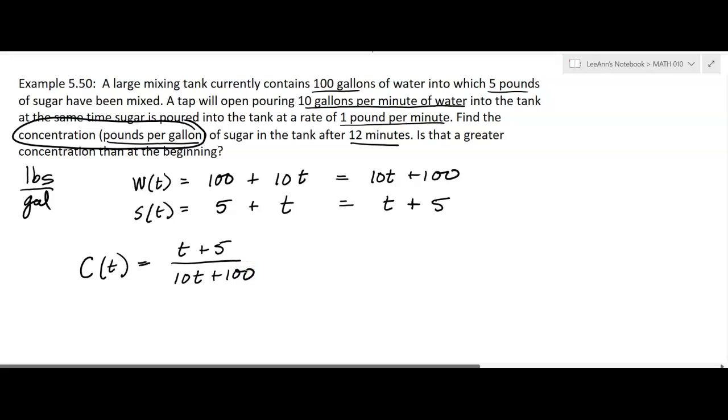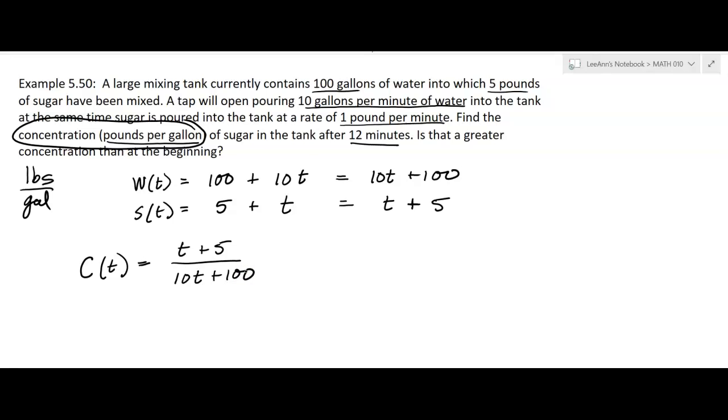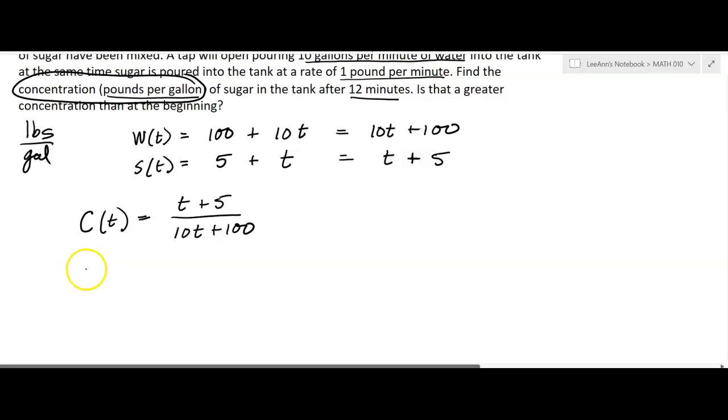Now it says, find the concentration after 12 minutes. So we have our function and we want to evaluate this at 12. So it's going to be 12 plus 5 over 10 times 12 plus 100. And that's going to be 17 over 120 plus 100, so 220.